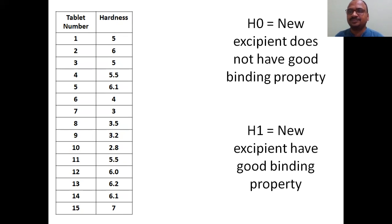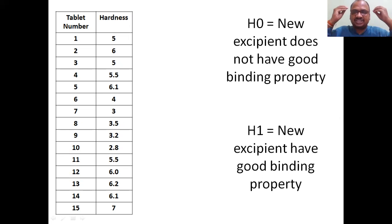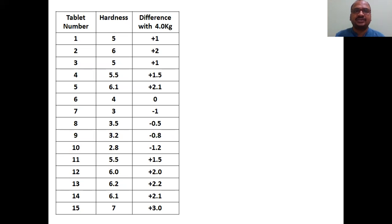First, construct the null hypothesis: H0 — the new excipient does not have good binding property. The alternative hypothesis H1 — the new excipient has good binding property. Hypothesis construction is the first step.